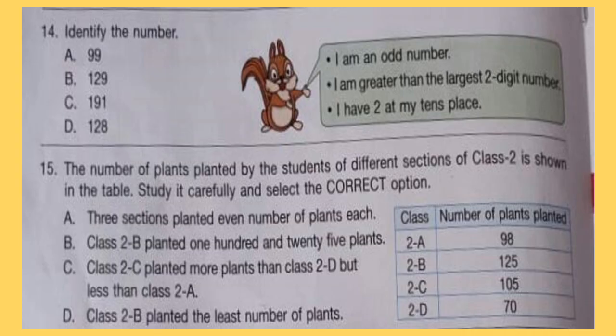Question 14: Identify the number. I am an odd number. I am greater than the largest two digit number. I have two at my tenths place.